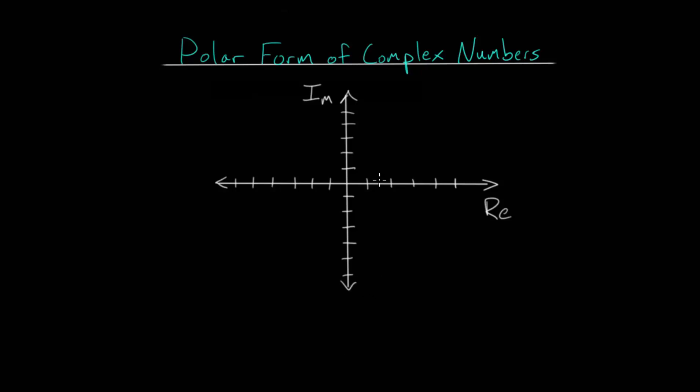In this video, I'd like to talk about the polar form of complex numbers, which essentially relates a complex number in terms of its angle from the positive real axis and its magnitude, its distance from the origin, which we also call its modulus or its absolute value.